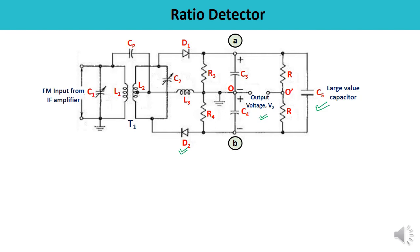In the ratio detector, the output voltage is equal to half of the difference between the output voltages from the individual diodes. If VO1 is the output voltage due to diode D1 and VO2 is the output voltage due to diode D2, then the output voltage equals half of the difference between the two. This is almost similar to the phase discriminator, where the output voltage is proportional to the difference between the individual output voltages. The operation of the ratio detector is therefore almost the same as the phase discriminator.